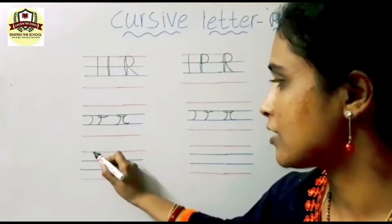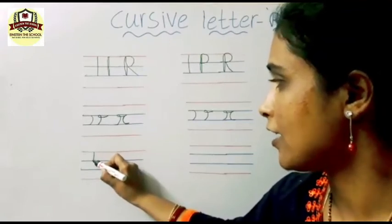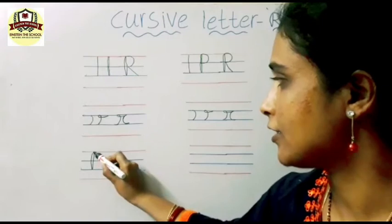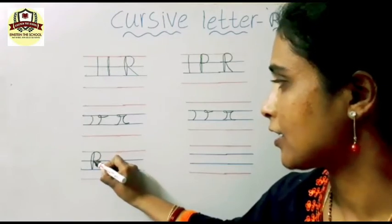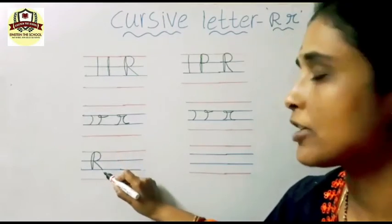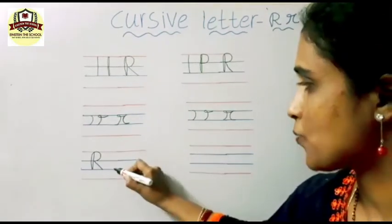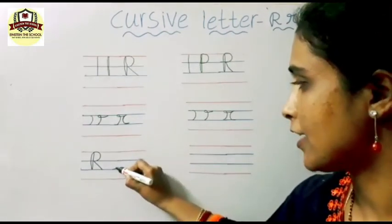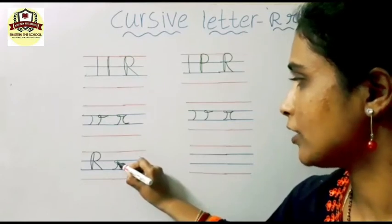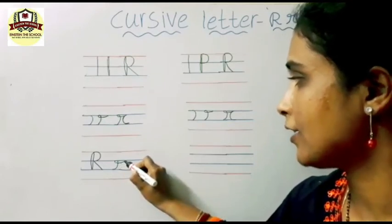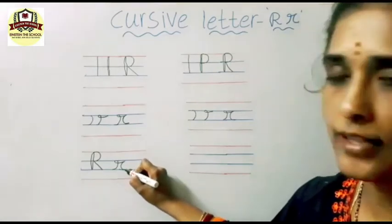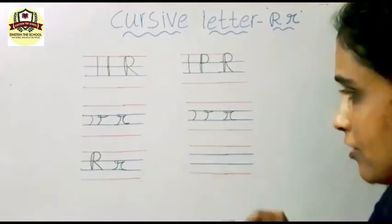Now see both the capital R and small r. For capital R, first write the letter P, then from here write the slanting line — this is the capital cursive R. Now small r: first write reverse C, make a small turn over there, write the sleeping line, and write the letter C. Small cursive R.